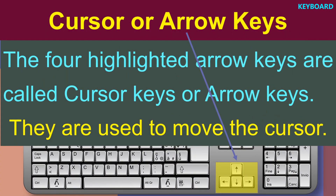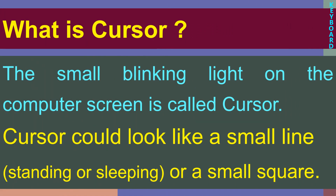Cursor or arrow keys are used for moving the cursor. A small blinking light on the computer screen is called a cursor. The cursor looks like a small line or small square.